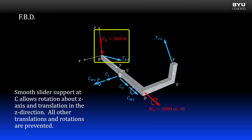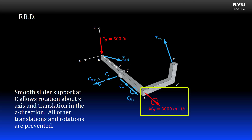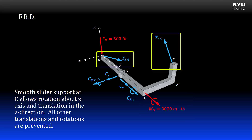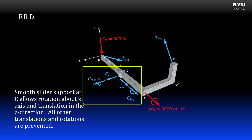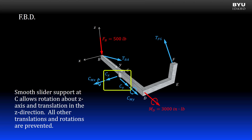Here is my free body diagram. I show the applied force at B and the applied moment at D in red. The support reactions are shown in blue. We have our two cable support reactions shown acting in tension in the direction of the cables. The other reactions occur at the smooth slider support at C. The support permits translation in the z direction but not in any other direction, so we get no reaction force in the z direction but we do get x and y direction reaction forces. The support permits rotation about the z axis but not about any other axis, so we get no z-axis moment reaction but we do get x and y axis reaction moments.